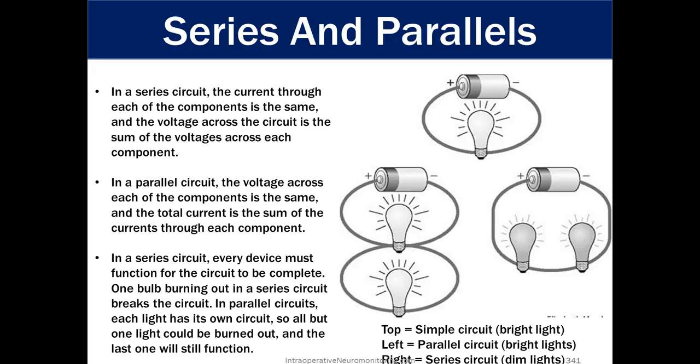In the series circuit, every device must function for the circuit to be complete. One bulb burning out in the series circuits breaks the circuit. So that's just like your Christmas lights. In parallel circuits, each light has its own circuit. So all but the one light could be burned out and the last one will still function.